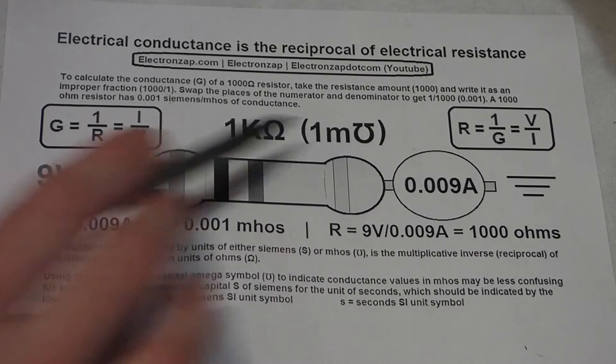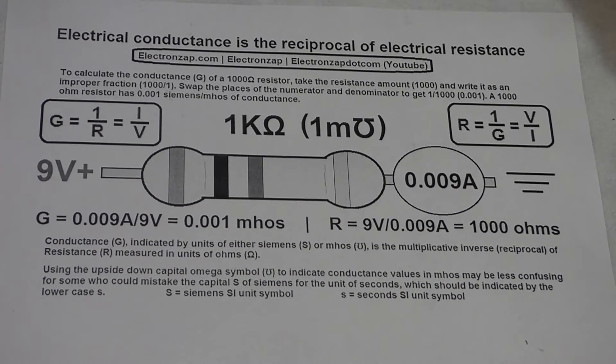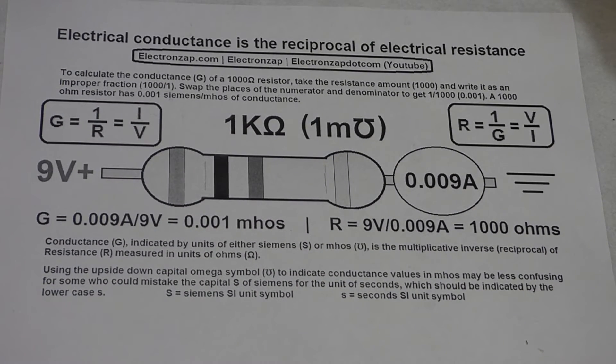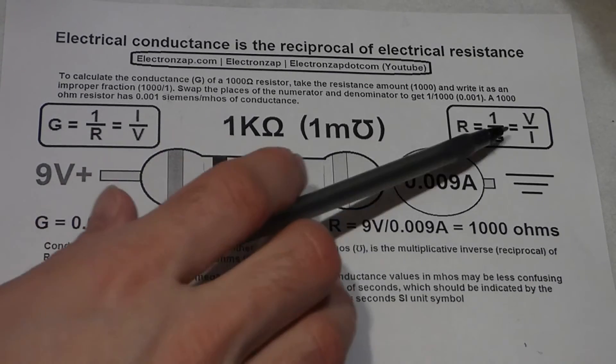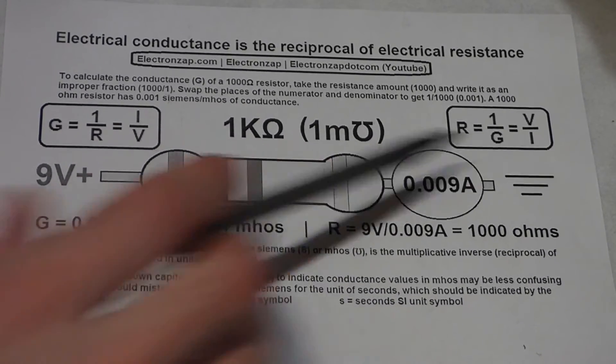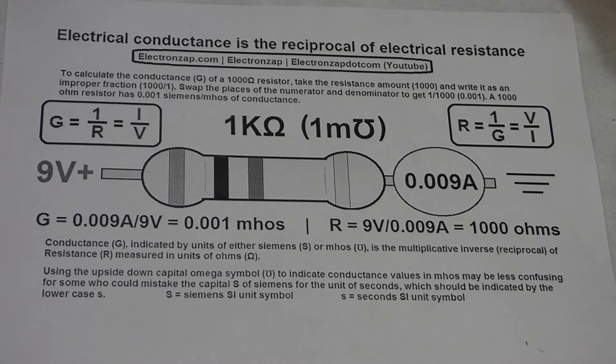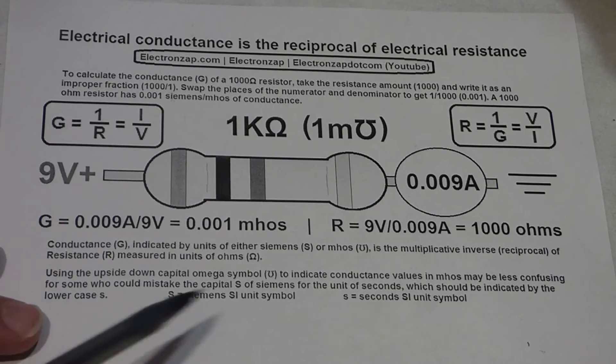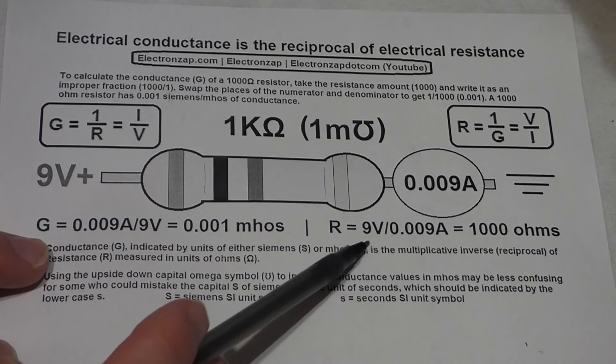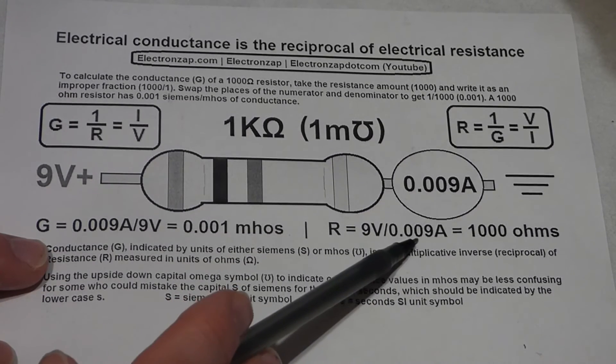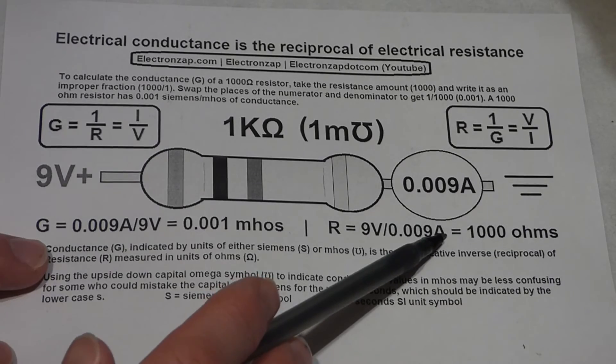In this diagram, I also showed that with resistance, that's voltage divided by current. That's Ohm's law. I did do the math down here: 9 volts divided by 0.009 amps.